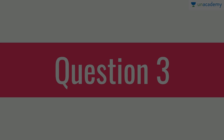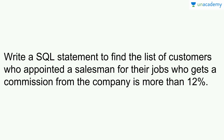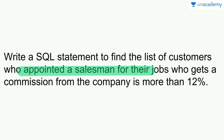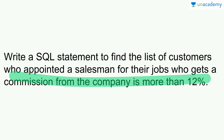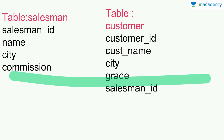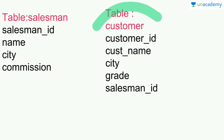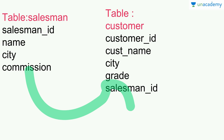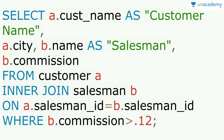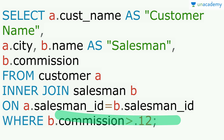Coming to question number 3: write a SQL statement to find the list of customers who appointed a salesman whose commission from the company is more than 12%. We check whether a customer has appointed a salesman and that commission should be more than 12%. We have salesman and customer tables, combining them through salesman ID. The query joins customer INNER JOIN salesman ON salesman ID, checking WHERE commission > 12%.